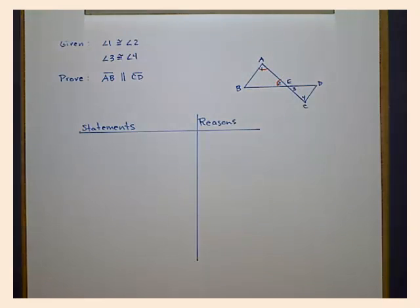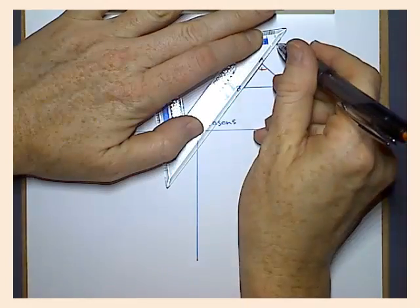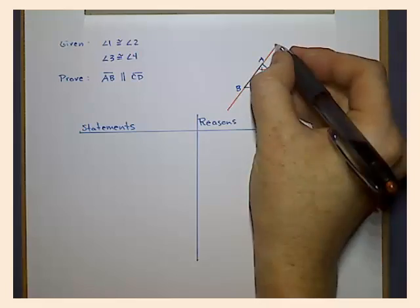The line segments that we are supposed to prove parallel are two sides of the triangles. So let's extend those sides so that we can really see what we're doing.